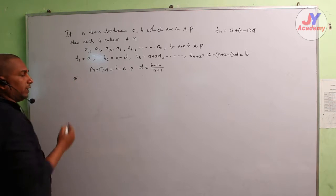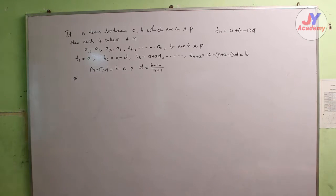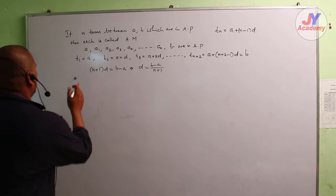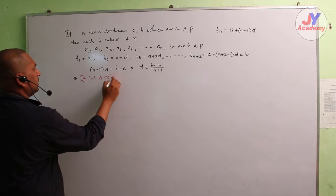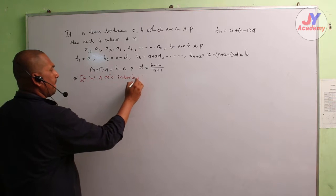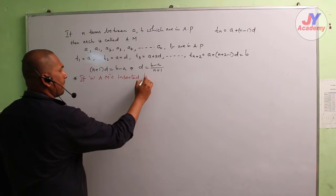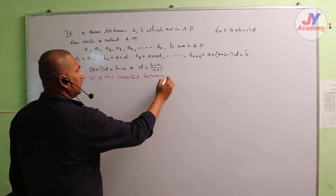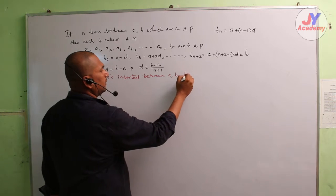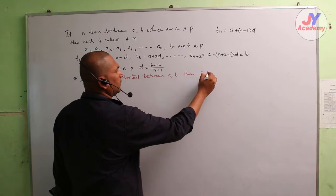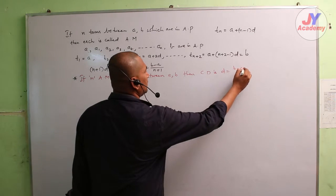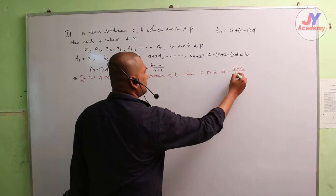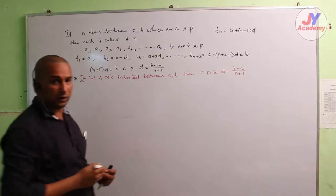So the formula derived here is: if n arithmetic means are inserted between a and b, then the common difference is d = (b − a) / (n + 1).